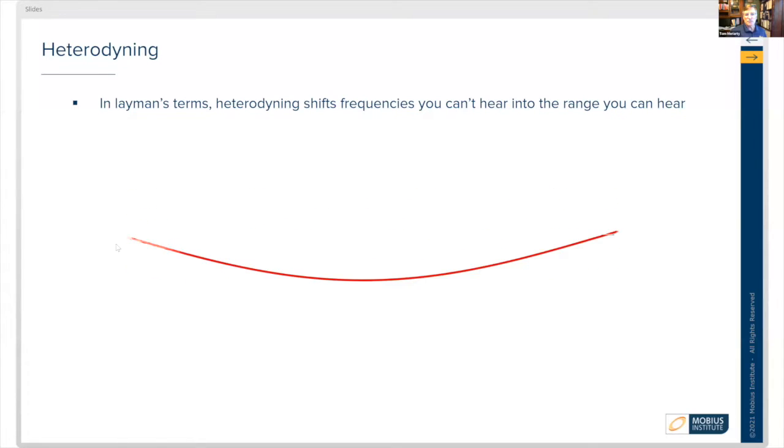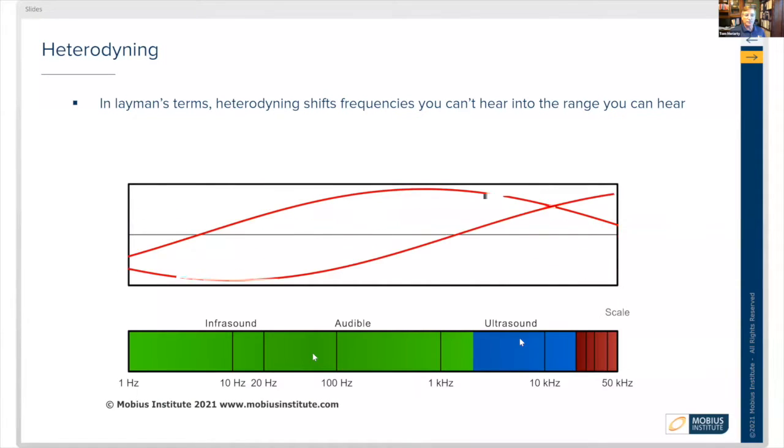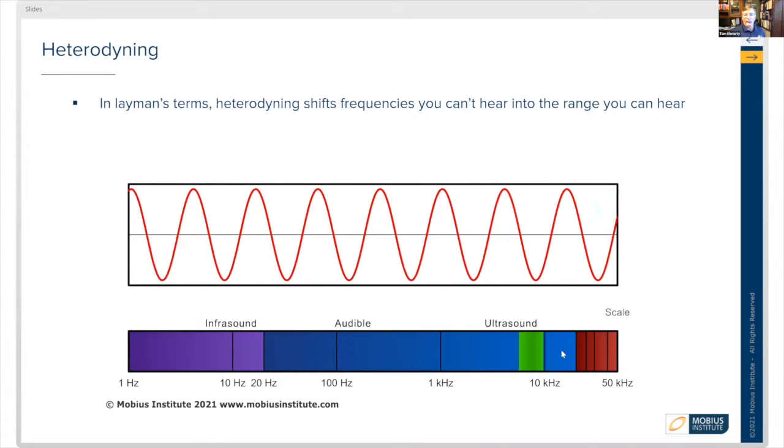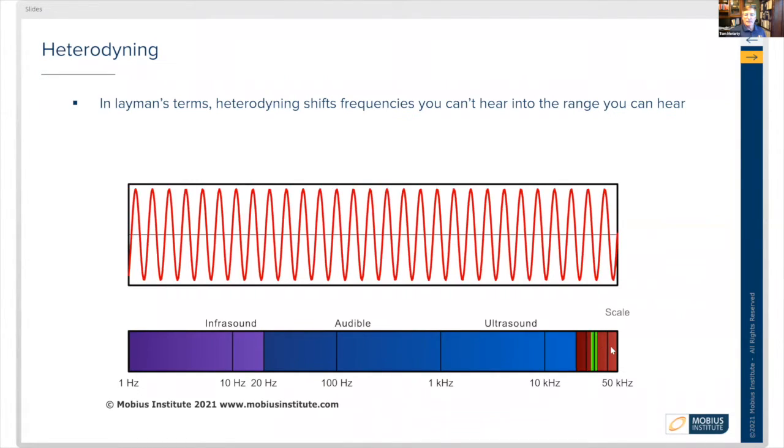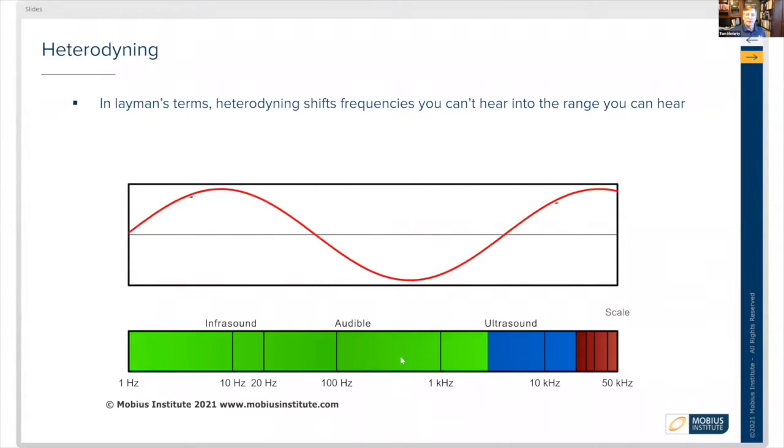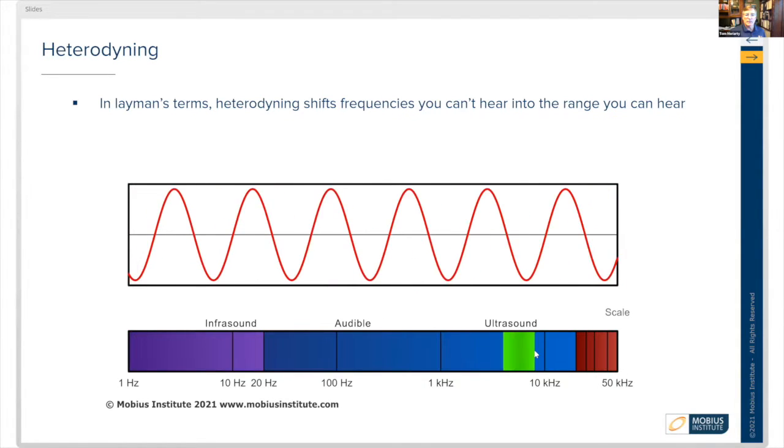Here's an example. In layman's terms, heterodyning really shifts frequencies from something that you can't hear to something that you can hear. In this green area, you see infrasound. That's sound that is at such a low level that it's very difficult or impossible for humans to hear. In the audible range, that's where humans can hear. Ultrasound are frequencies above human capabilities to hear. And so, as you move up, you see that the frequency actually changes. The shape of the waveform changes. As you go up and down, you can see that there are different characteristics to that waveform.